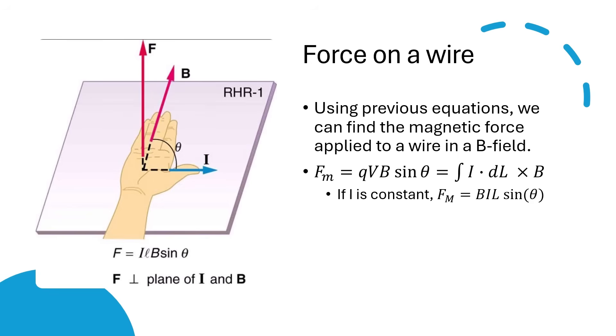I won't go too in-depth right now, but an example application of this formula is when you have two parallel wires. Using fm equals bil, you can find that the parallel wires feel a force towards each other, and wires with current going in opposite directions repel.